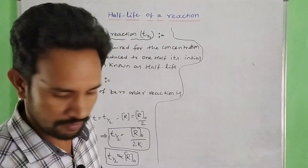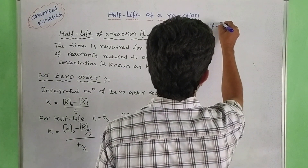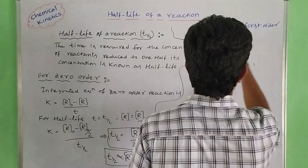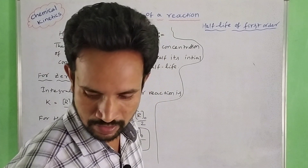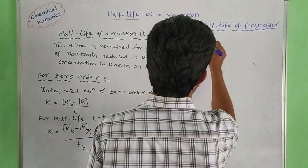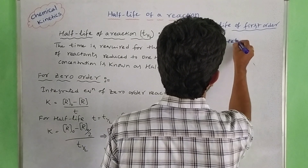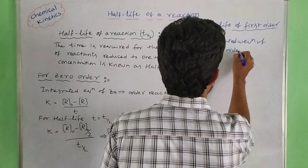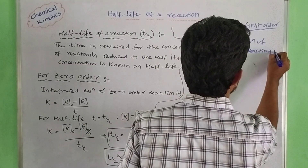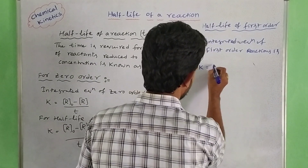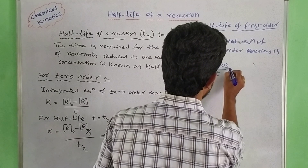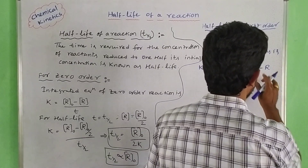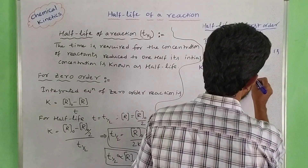Next is the half-life of first-order reactions. For first-order reactions, the integrated equation is: K equal to 2.303 by T into log of concentration of R₀ divided by concentration of R.